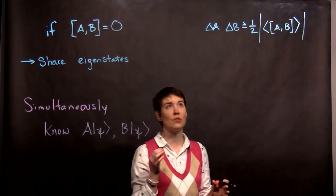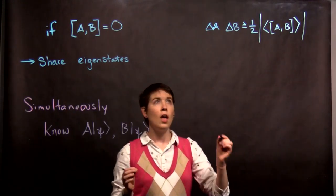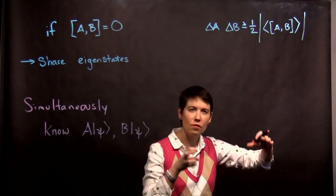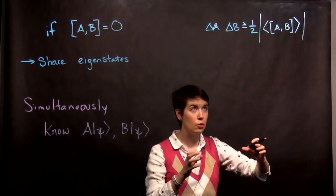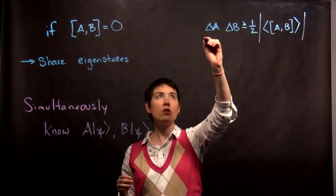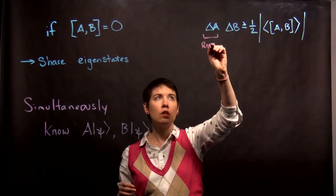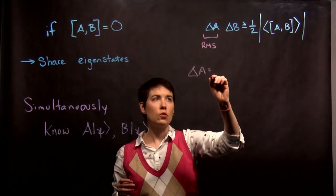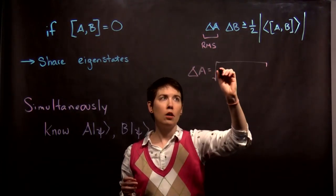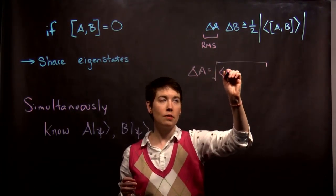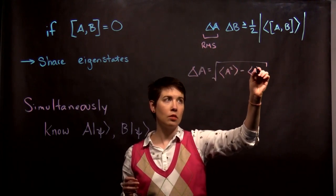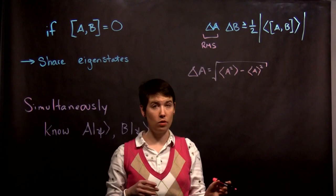So this gets us to our uncertainty relationship. And again, this is starting to look really complex, because we've embedded a lot of meaning into the notation itself. So each of these is our RMS, and remember that we define that as the square root of the operator itself squared minus the expectation value squared.